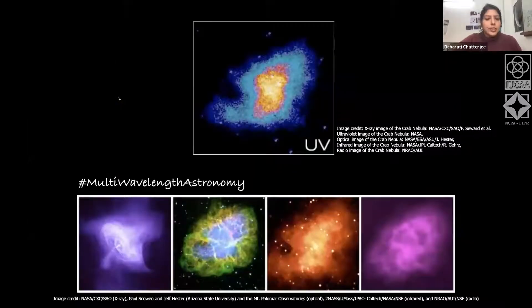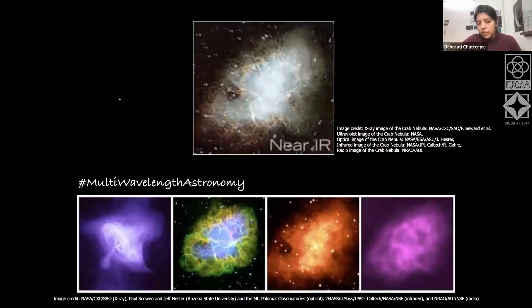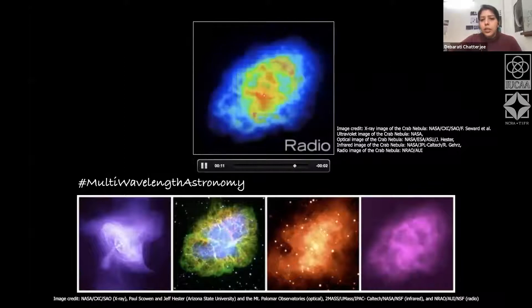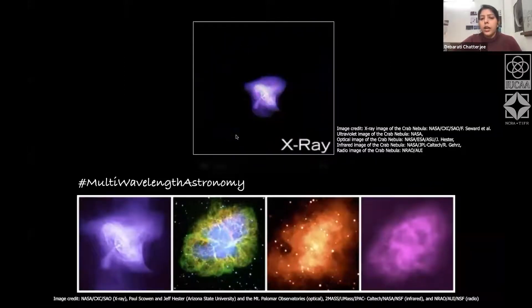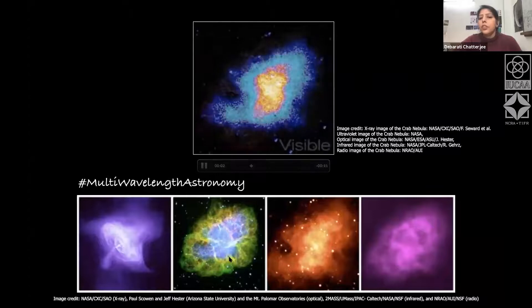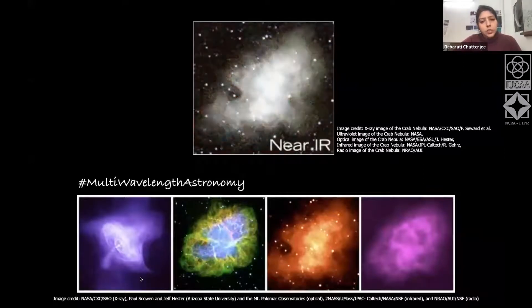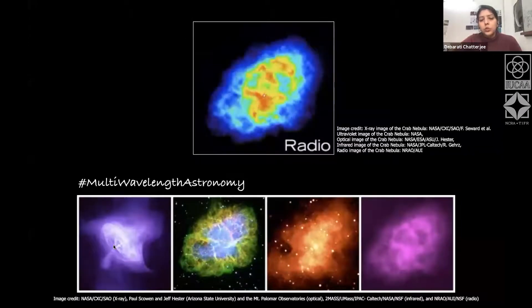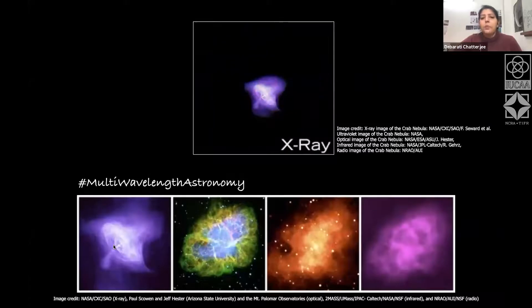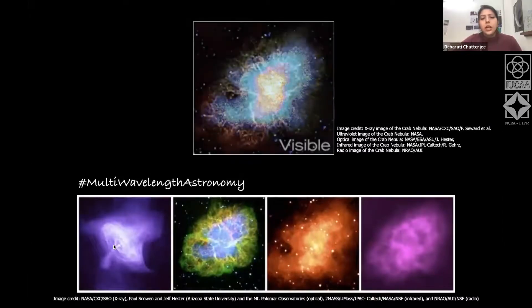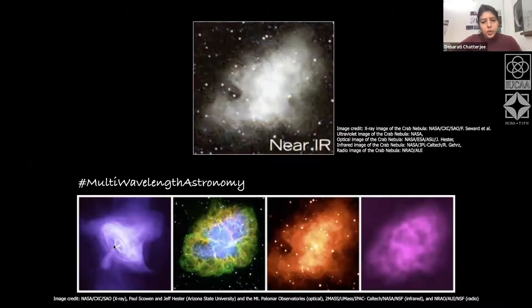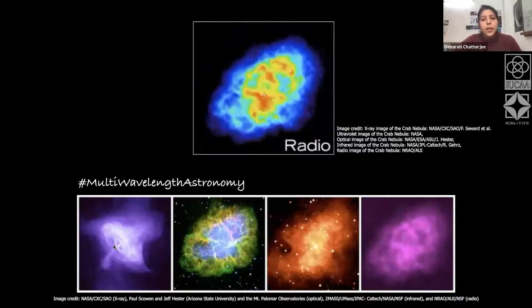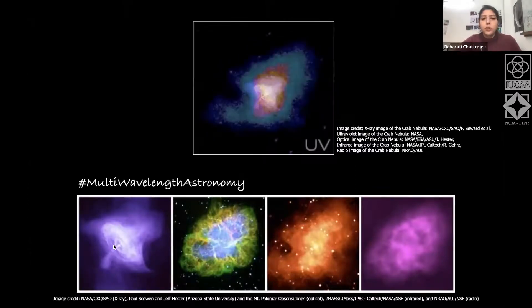As an example, the Crab Nebula can be seen at different frequencies. At radio frequencies, the features are not very clear. However, at X-ray frequencies, we can see the inner compact object — the pulsar — inside the nebula. These multi-wavelength observations help us understand many different features of pulsars, their wind nebulae, their formation, giving us a complete picture.